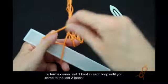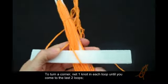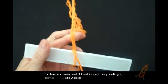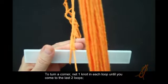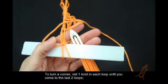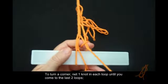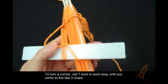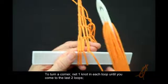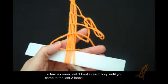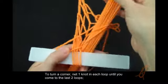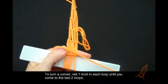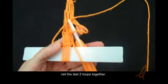To turn a corner, net one knot in each loop until you come to the last two loops. Net the last two loops together.